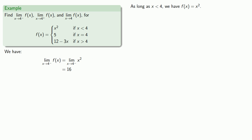Similarly, if x is greater than 4, then our function is 12 minus 3x. So the limit as x approaches 4 from above of f of x is the limit as x approaches 4 from above of 12 minus 3x, which is 0.